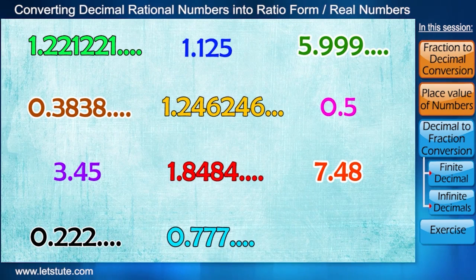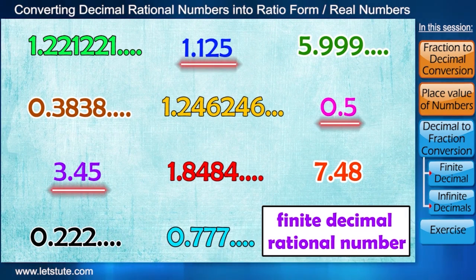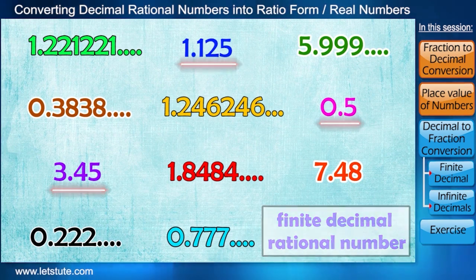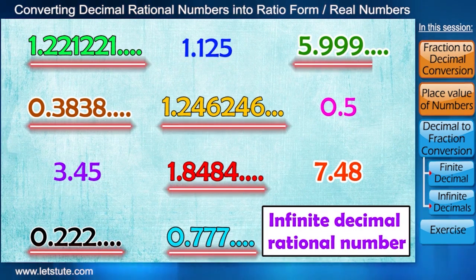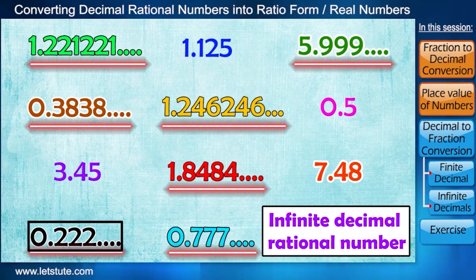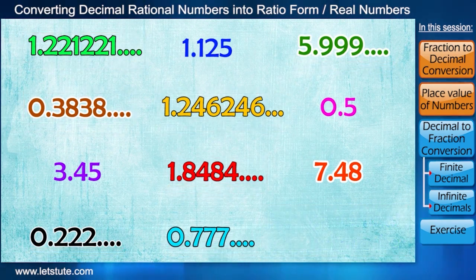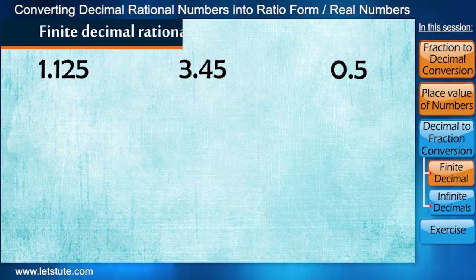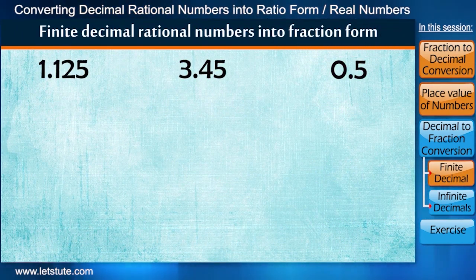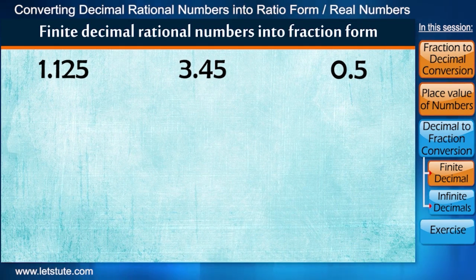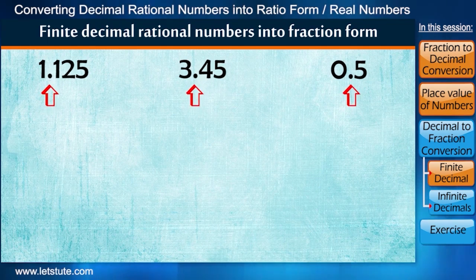Now we know that decimal form of rational numbers can have finite number of digits, or it can have infinite number of digits with one or more digits repeating in a pattern. So let's first learn to write finite decimal rational numbers into the fraction form. To write these numbers in fraction form, our very first step is to remove the decimal point.